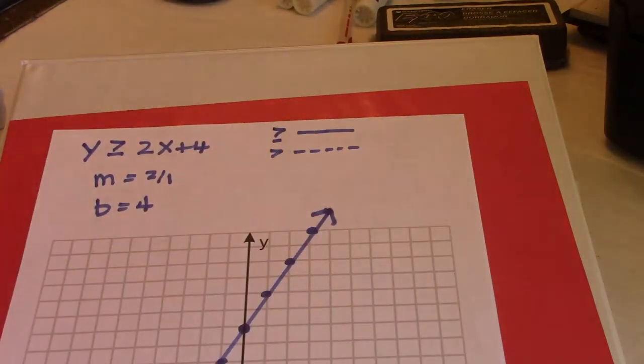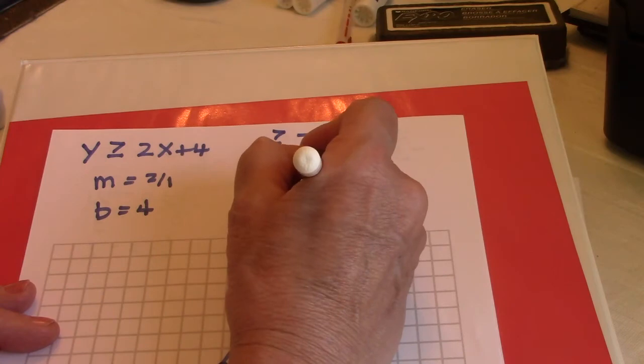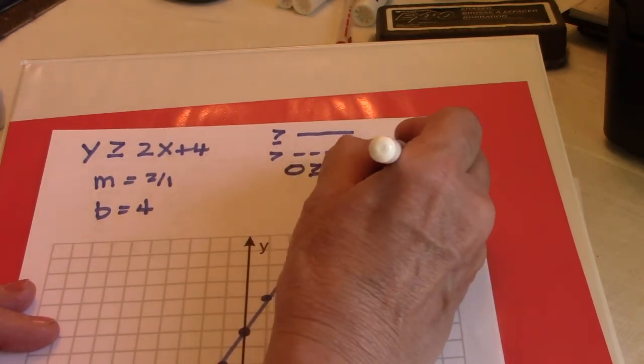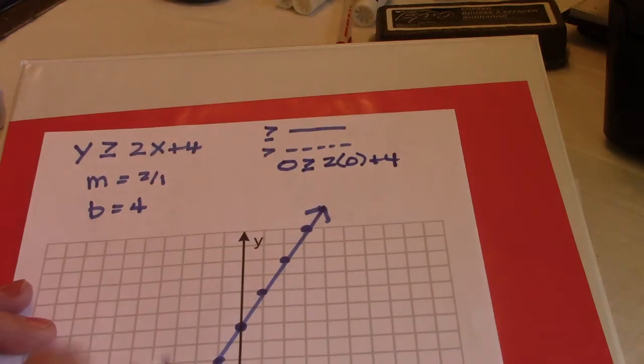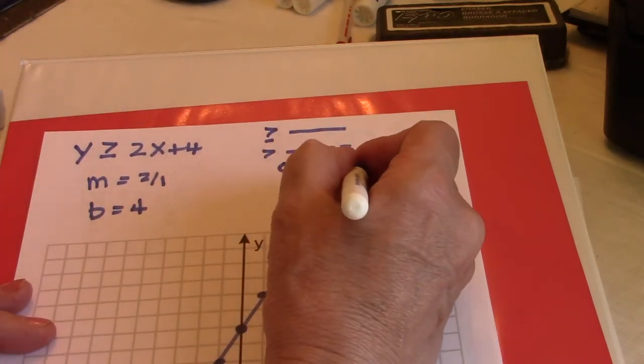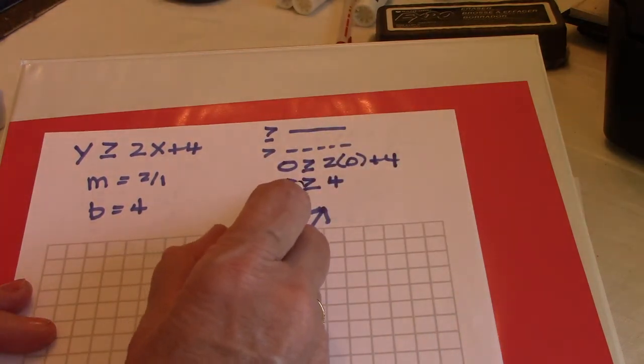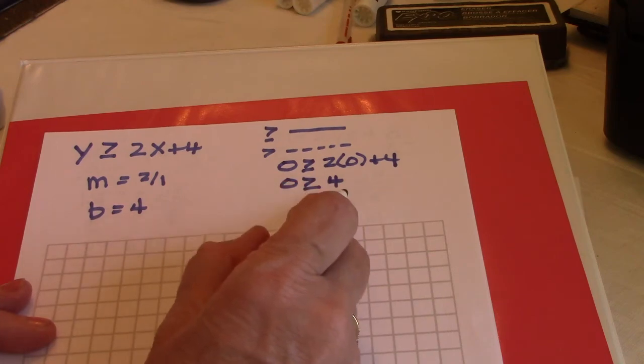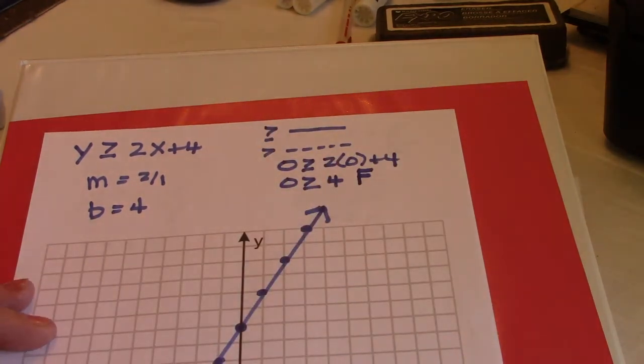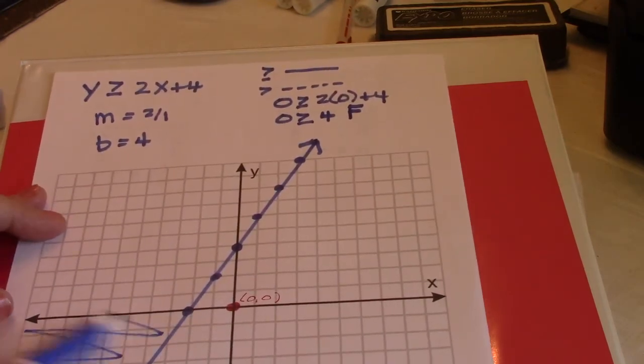Alright, so let's plug in the test point. So 0 is greater than or equal to 2 times 0 plus 4. That's my test point. 0 is greater than or equal to 2 times 0 is 0 plus 4 is 4. Is 0 greater than or equal to 4? That is false, which means that point, that point right there doesn't work. So I can't shade that side.